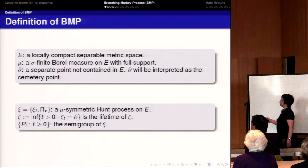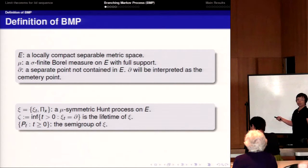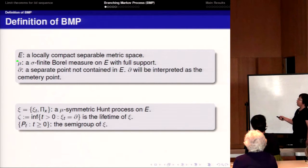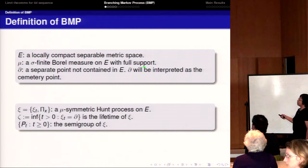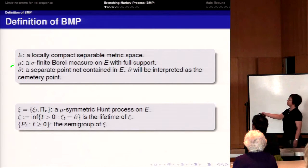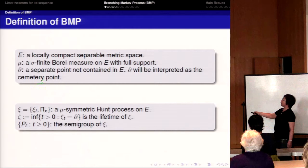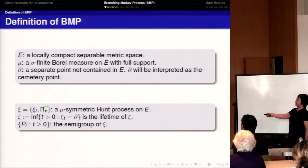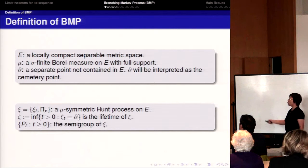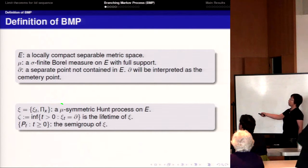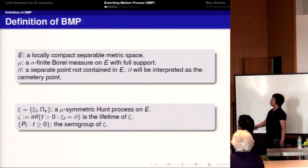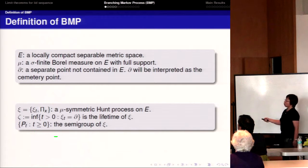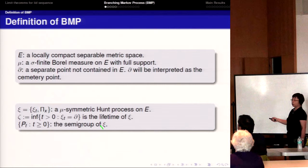Let's look at some notation. Suppose E is a locally compact, separable metric space, and mu is a sigma-finite measure for support. I will use a Hunt process, which is symmetric with respect to this reference measure mu, and use p_t to denote the semigroup of this Hunt process.